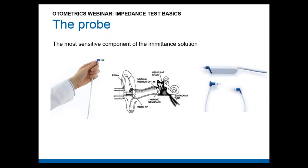Inside this probe we find a microphone, a receiver, and a pressure sensor — multiple important transducers miniaturized and introduced into an ear canal that can be very hot and warm with earwax. These conditions can affect the quality of the components, which is why the probe is the most sensitive part of the immittance solution. When choosing an immittance solution, the key questions are: what probe technology is used, how big is the probe, and how reliable is it?